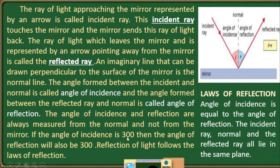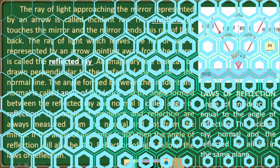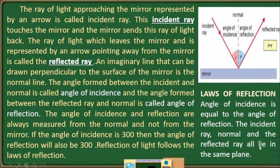If the angle of incidence is 30 degrees, then the angle of reflection will also be 30 degrees. Reflection of light follows the laws of reflection. Law of reflection: the angle of incidence is always equal to the angle of reflection. The incident ray, the normal, and the reflected ray all lie in the same plane.